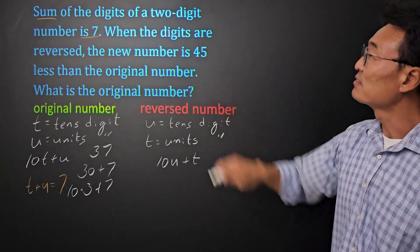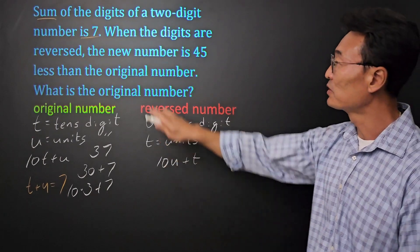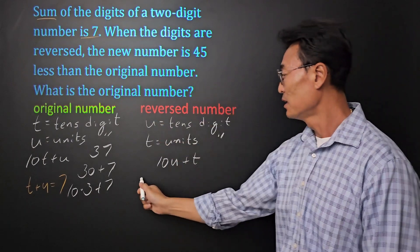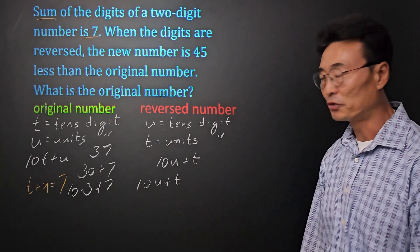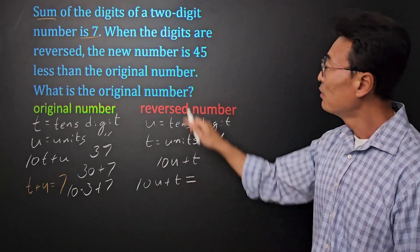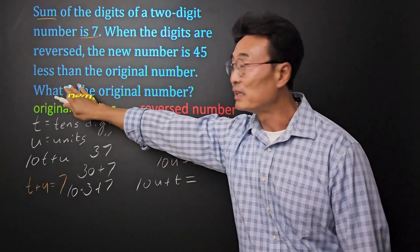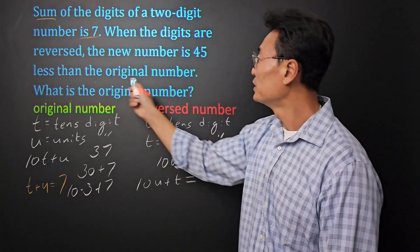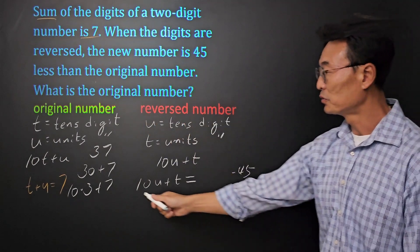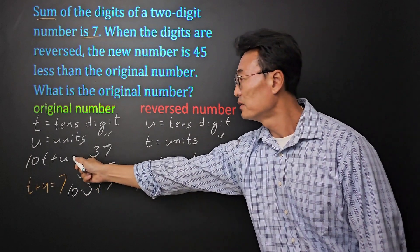If we continue, when the question says that when the digits are reversed, the new number, meaning the 10u plus t, that's the new number or the reverse number, is 45 less than, so that's going to be something minus 45, and the original number, and the original number was 10t plus u.